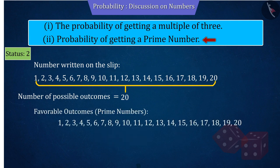As you can see here, the prime numbers between 1 and 20 are 2, 3, 5, 7, 11, 13, 17 and 19.